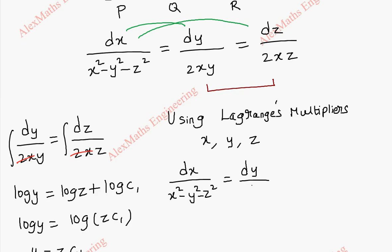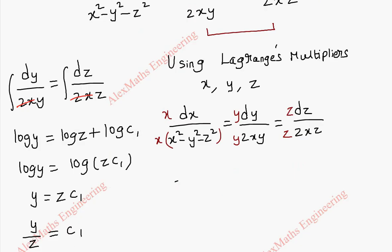Second term is dy by 2xy and third term is dz by 2xz. Let us multiply x with both numerator and denominator, here y with both numerator and denominator, z with both numerator and denominator.